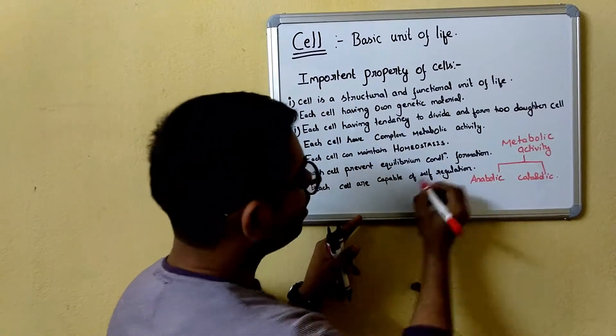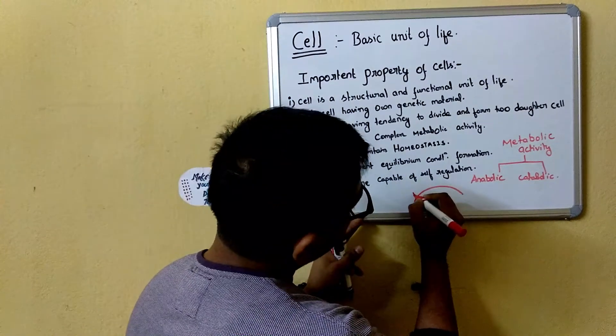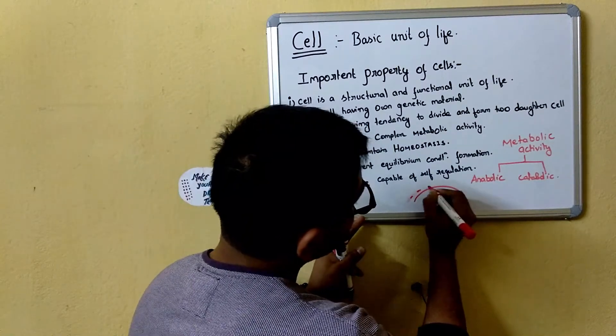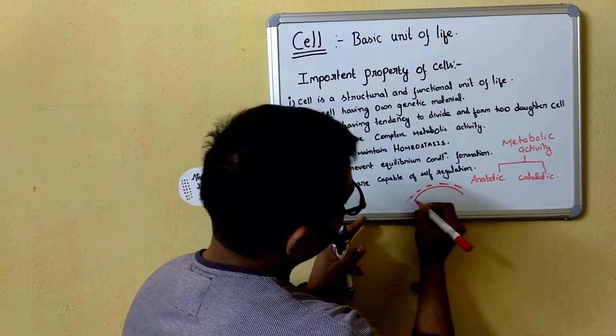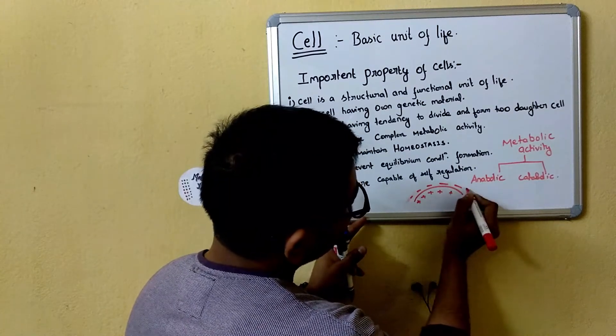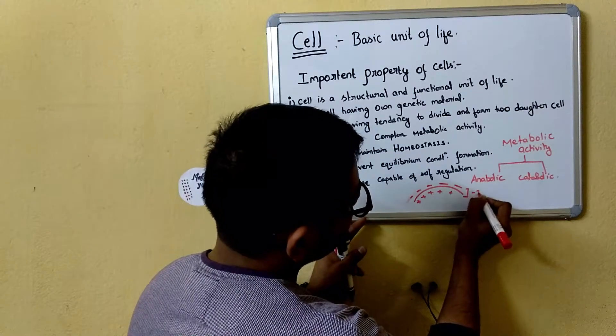This is a cell membrane. On the outer side, there is a negative charge, and in the cytoplasmic phase, there is a positive charge. There is a potential difference of minus 70 millivolts, which means they are in an excited state.